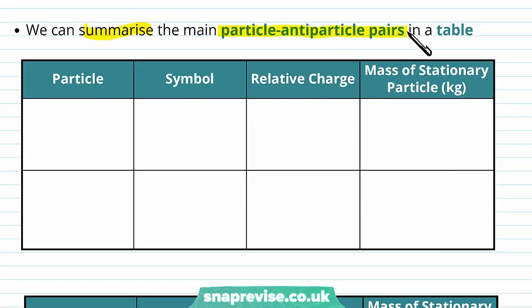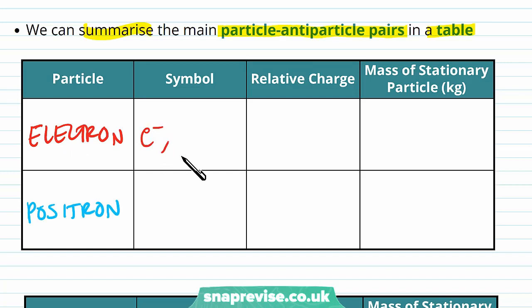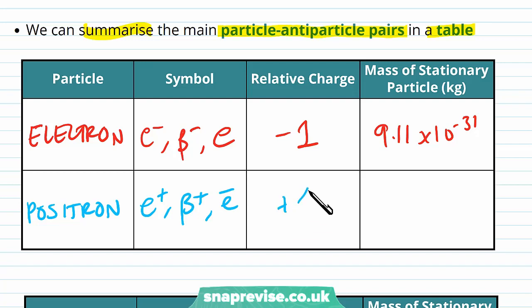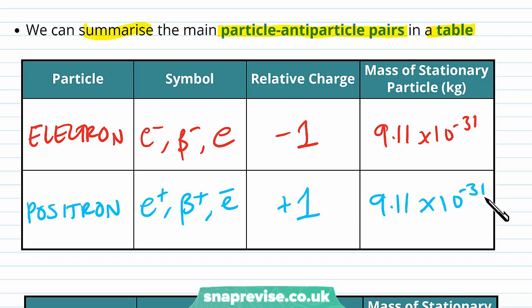We can summarize the main particle-antiparticle pairs in a table. For the electron, symbols are e⁻, β⁻, and e; relative charge is −1; and mass is 9.11 × 10⁻³¹ kg. We can deduce the properties of the positron from its particle pair: symbol is e⁺, β⁺, or ē; relative charge is +1 (same magnitude, opposite sign); and mass is 9.11 × 10⁻³¹ kg, the same as the electron.